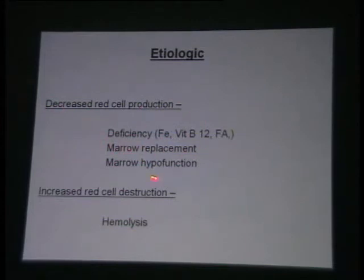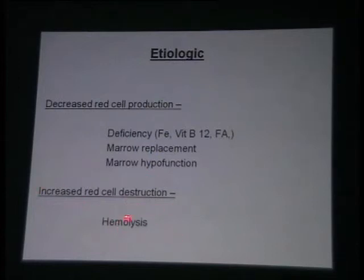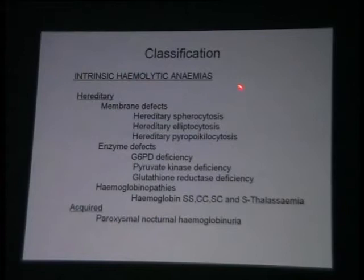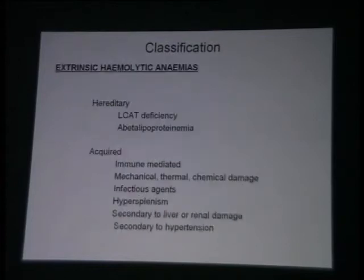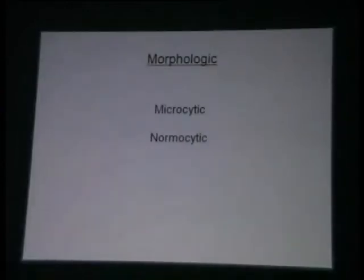Decreased production may also be due to a non-functioning or hypo-functioning marrow. Increased red cell destruction is usually taken as hemolysis, which may be intrinsic hemolytic anemias — a whole list — or extrinsic hemolytic anemias, again a large number found in your books. But when looking at a case, you cannot approach a patient purely from that textbook classification.